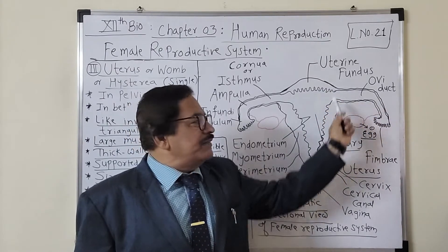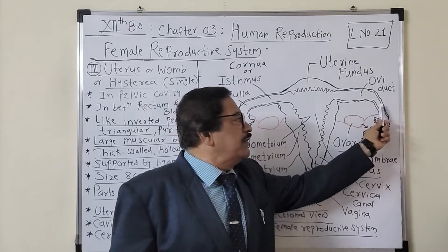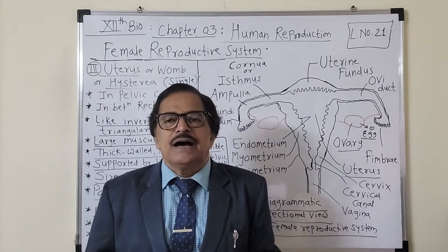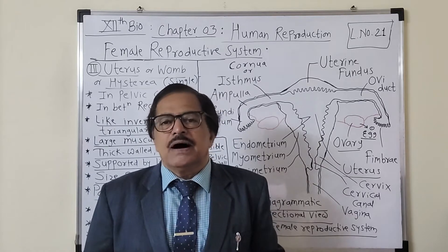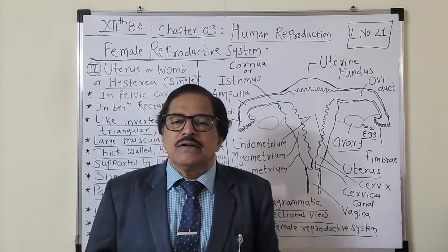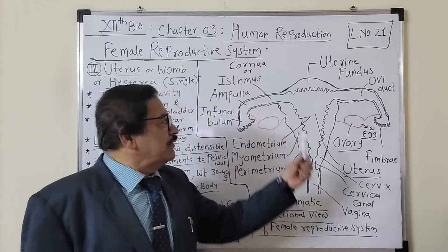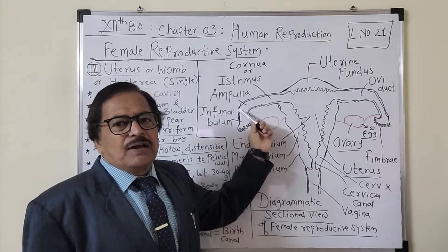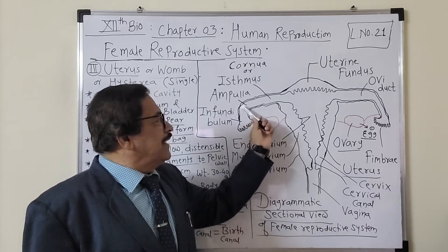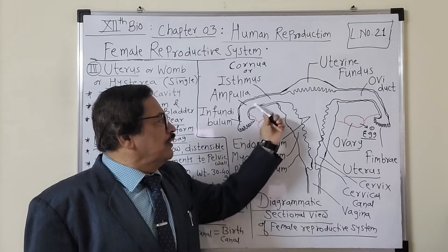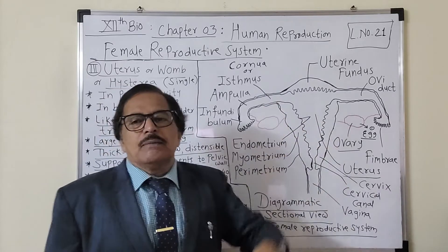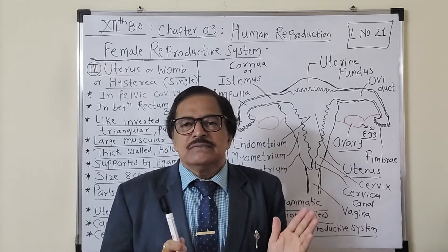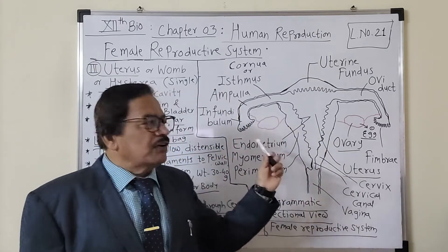If coitus has taken place, fertilization occurs in the ampulla region of the oviduct, which is considered the site for fertilization. The fertilized egg forms a zygote, which is pushed forward by cilia through the oviduct toward the uterus. So, the conduction of the egg or fertilized egg is the main function of the oviduct.